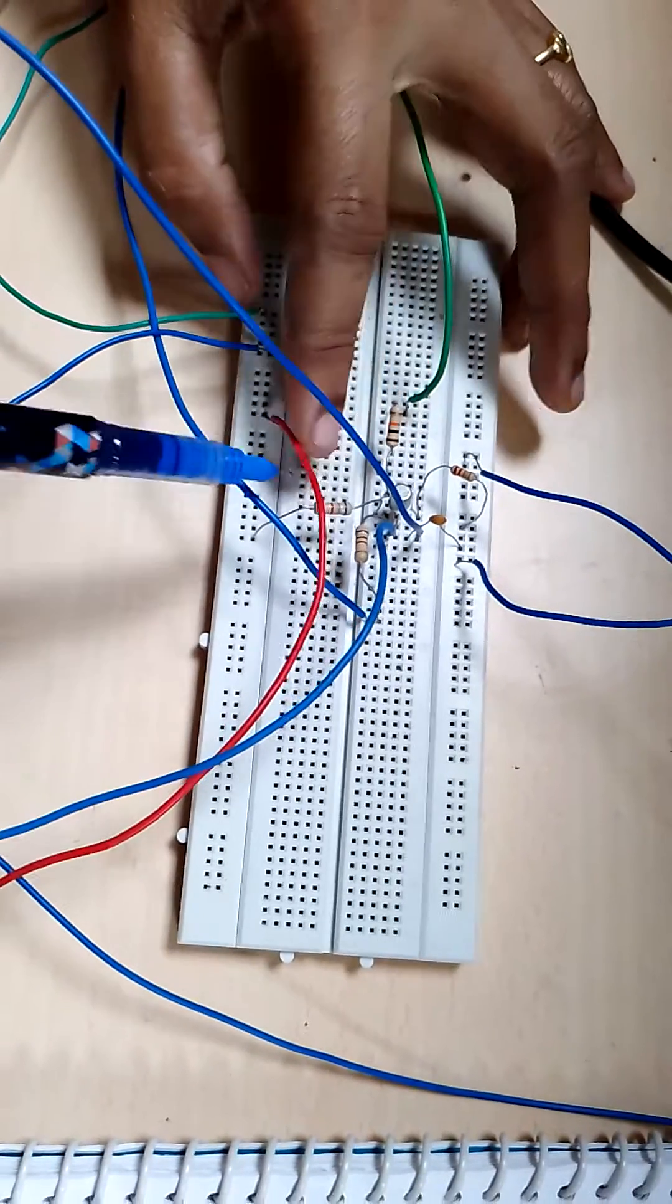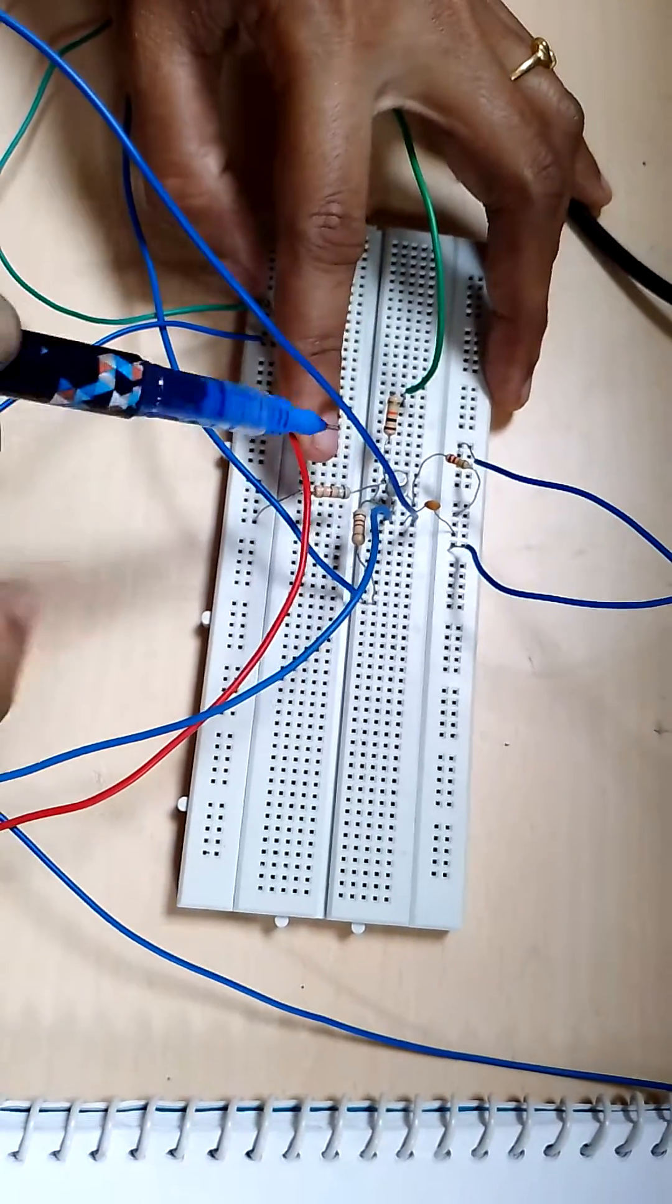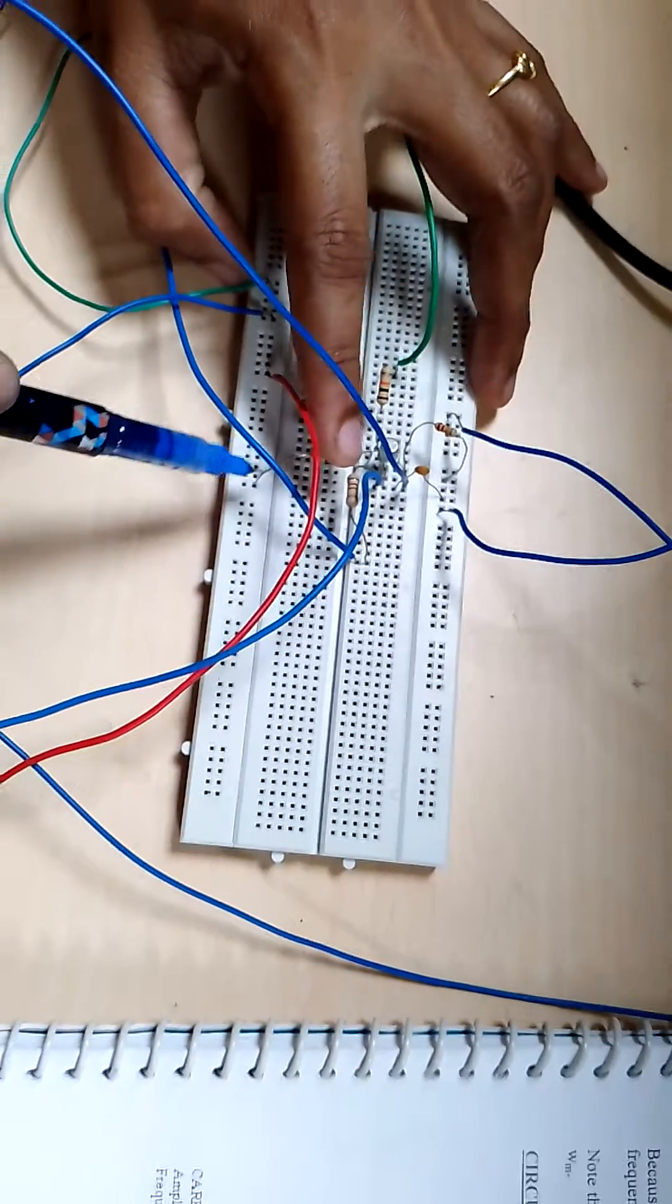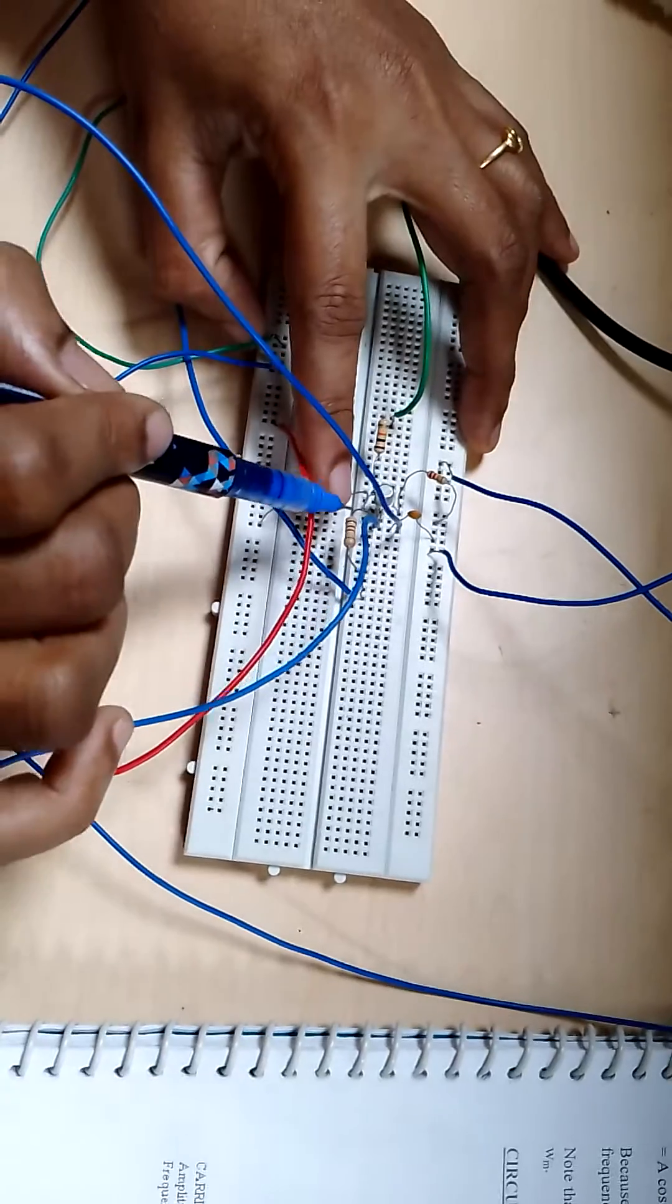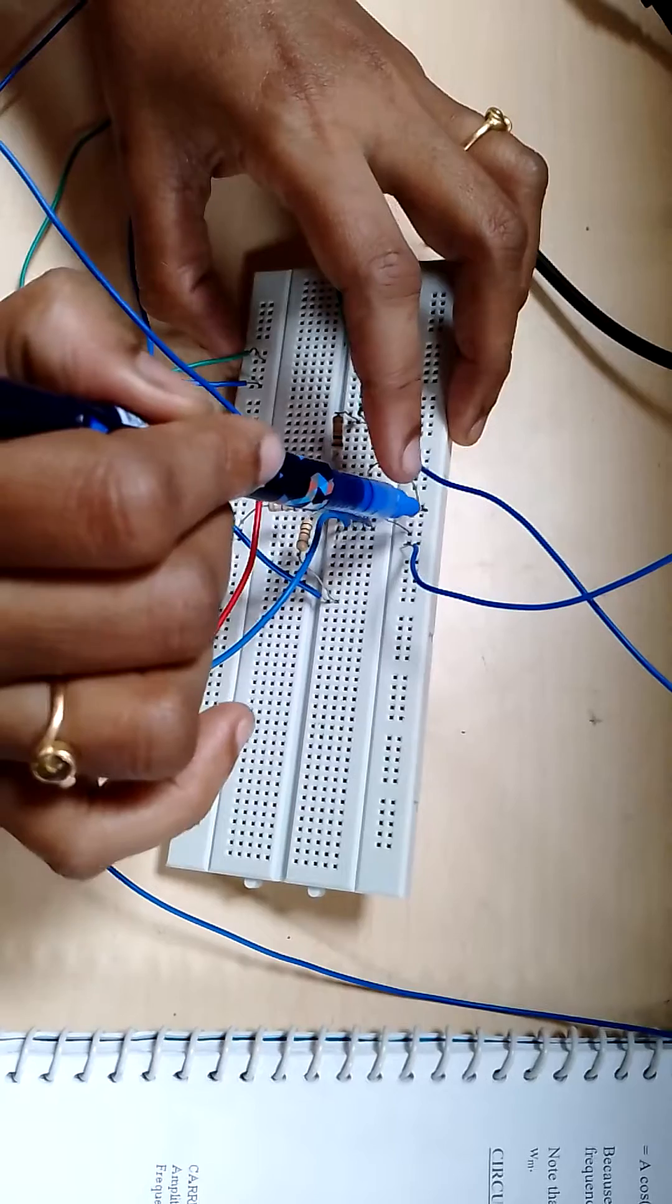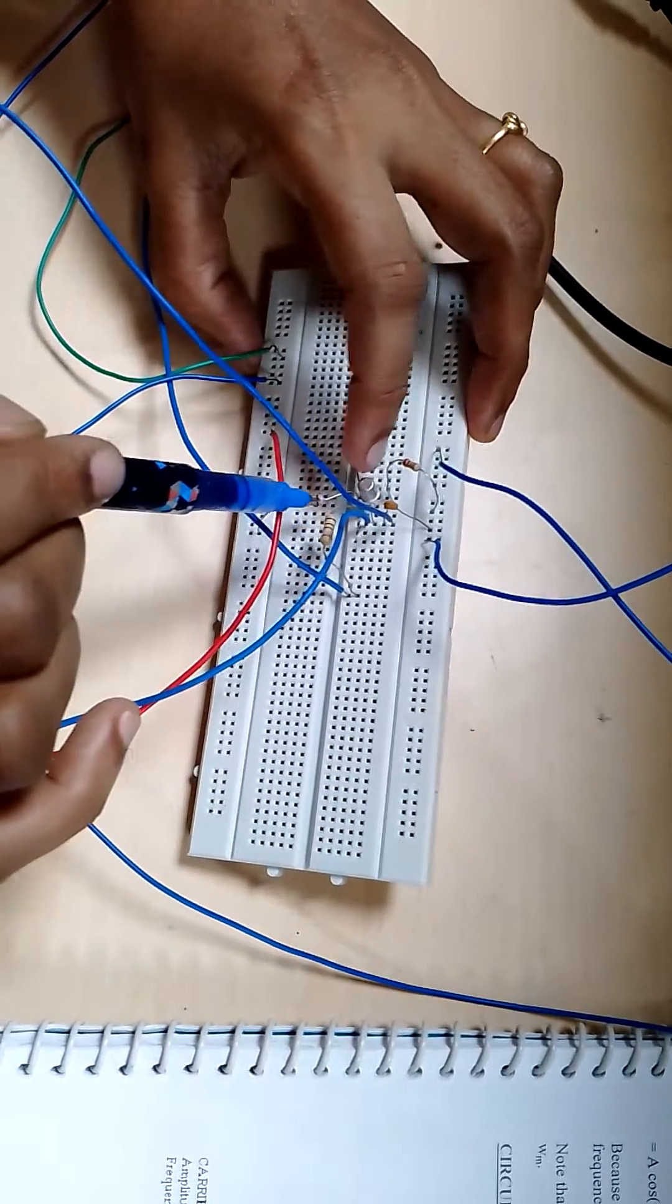From the base, we have connected a 6.8 kilo ohms resistance with the other end to ground. From the base, another 22 kilo ohms resistance with the other end connected to VCC.